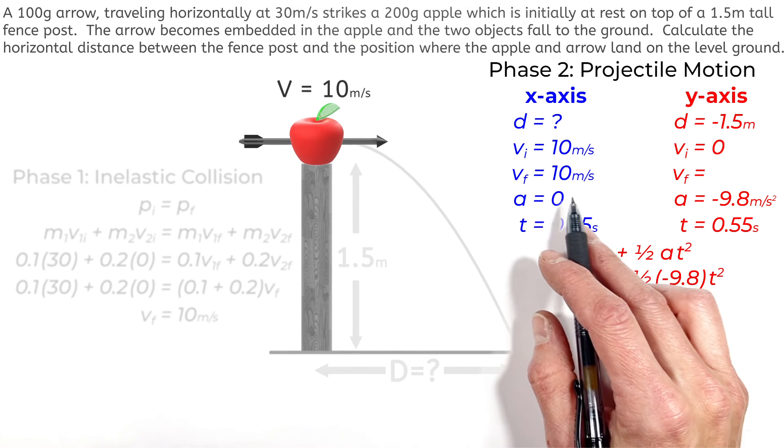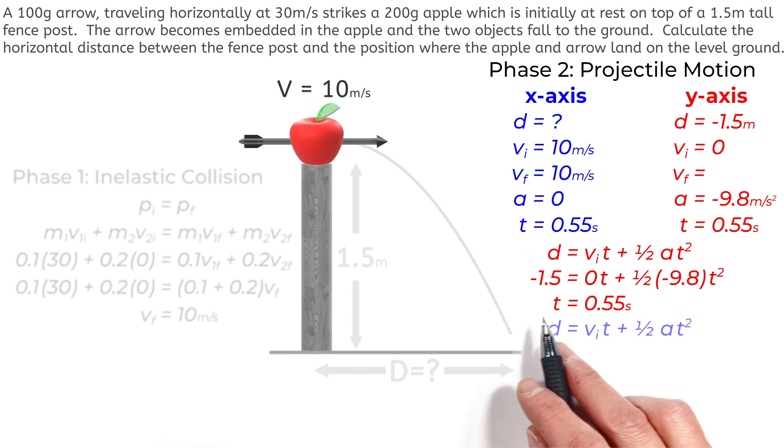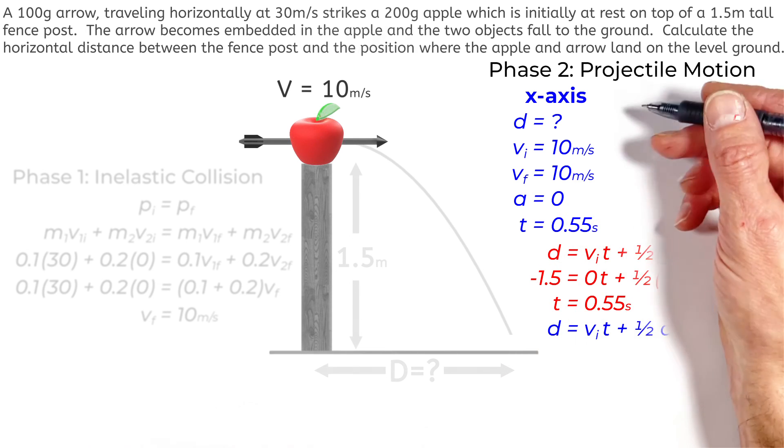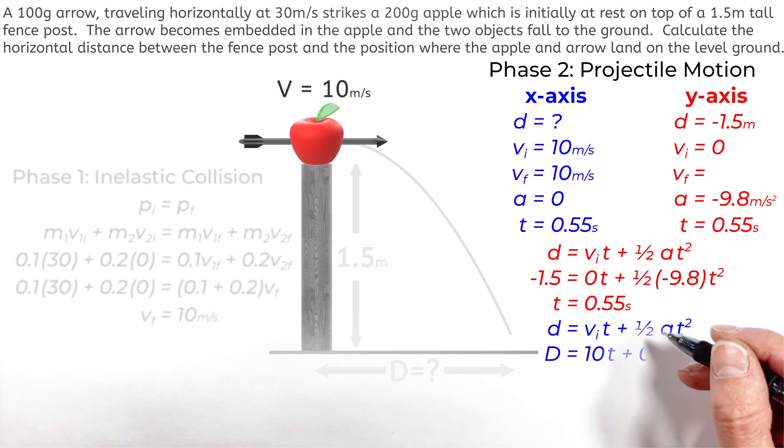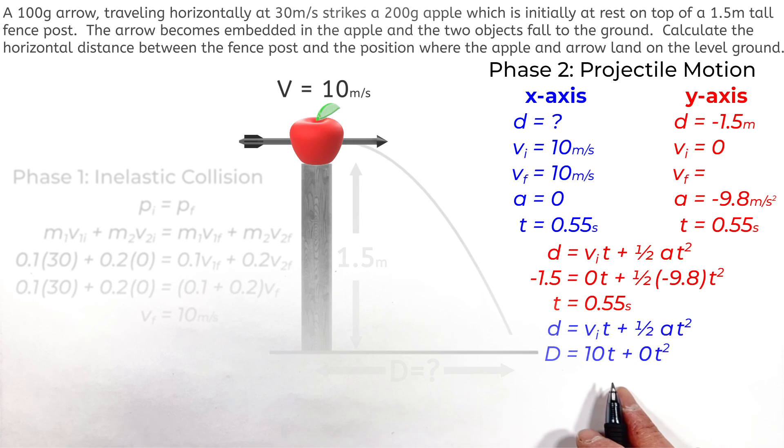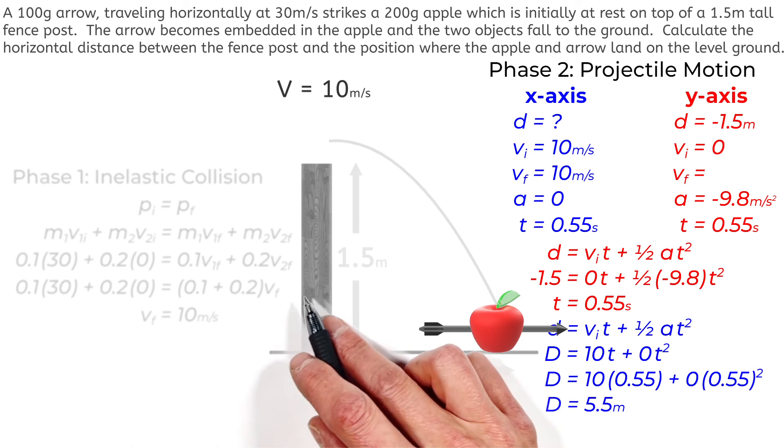So now, knowing our objects are traveling horizontally for 0.55 seconds, we can again turn to the displacement equation and apply our numbers from the x-axis to that equation. So plugging in the velocity is 10 and the horizontal acceleration is 0, we solve for the displacement in the x-axis is 5.5 meters.